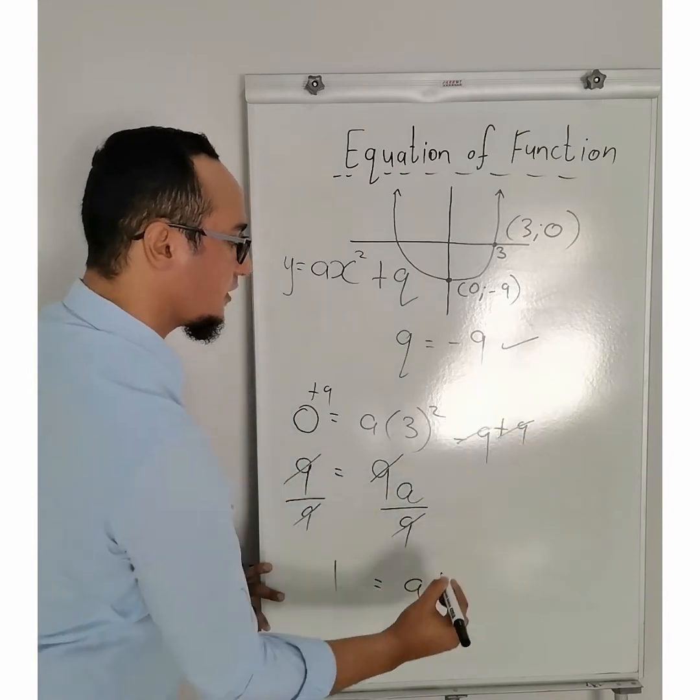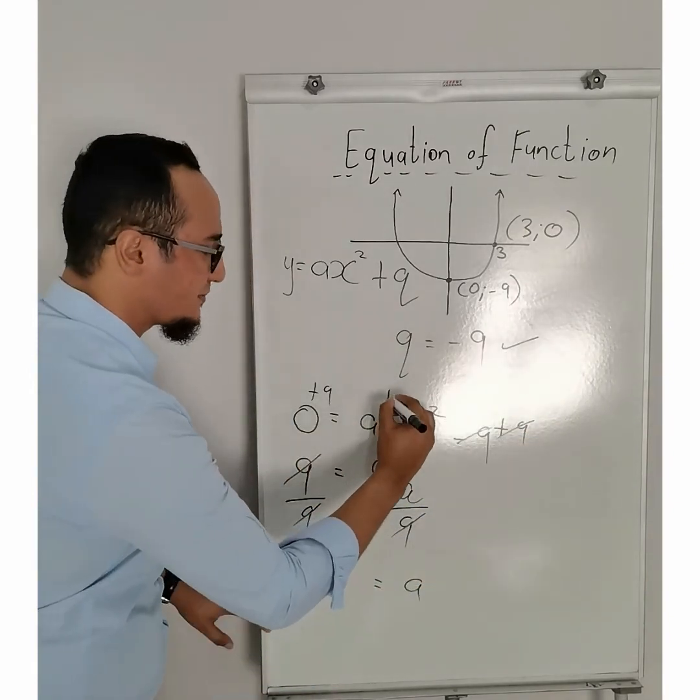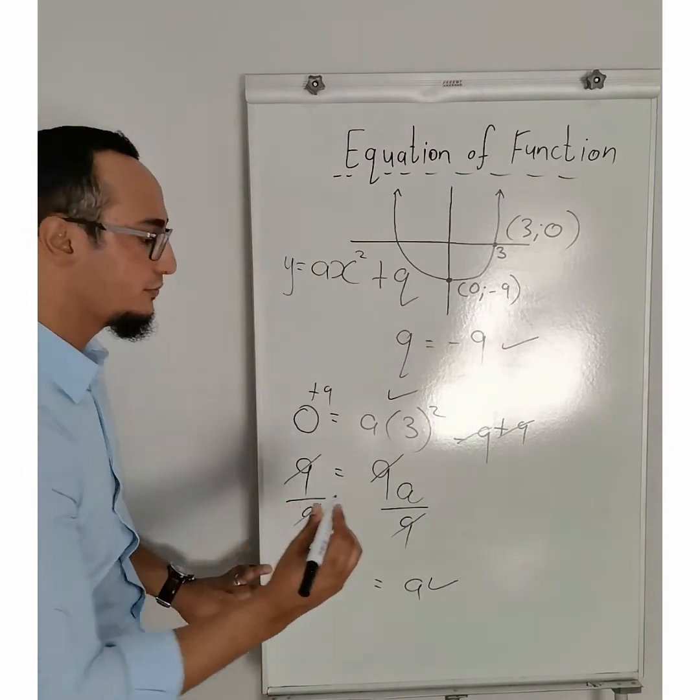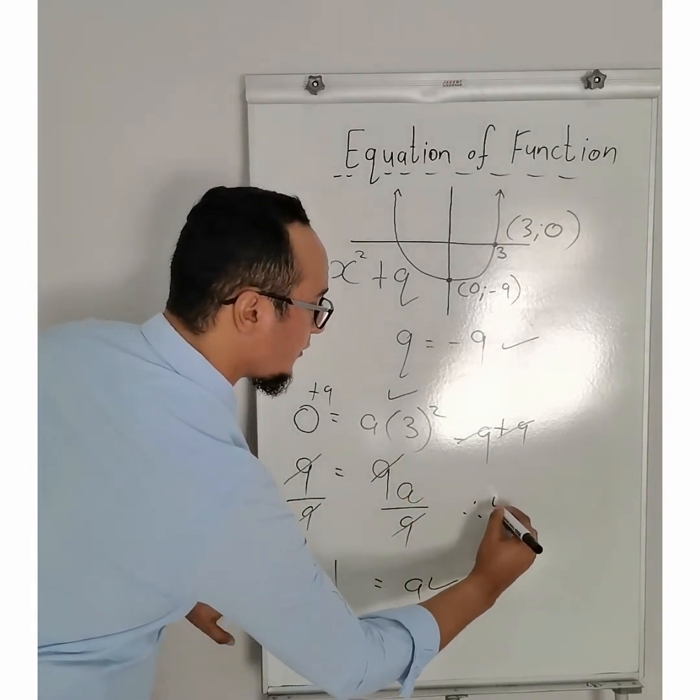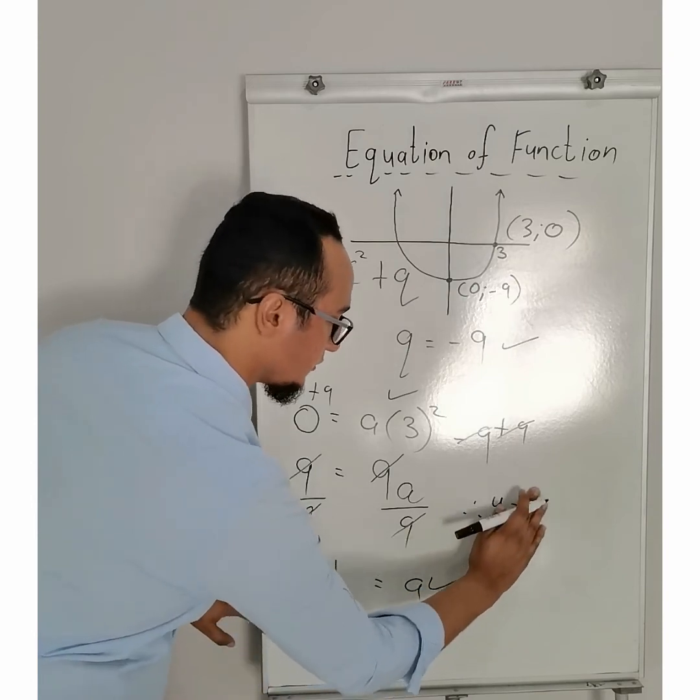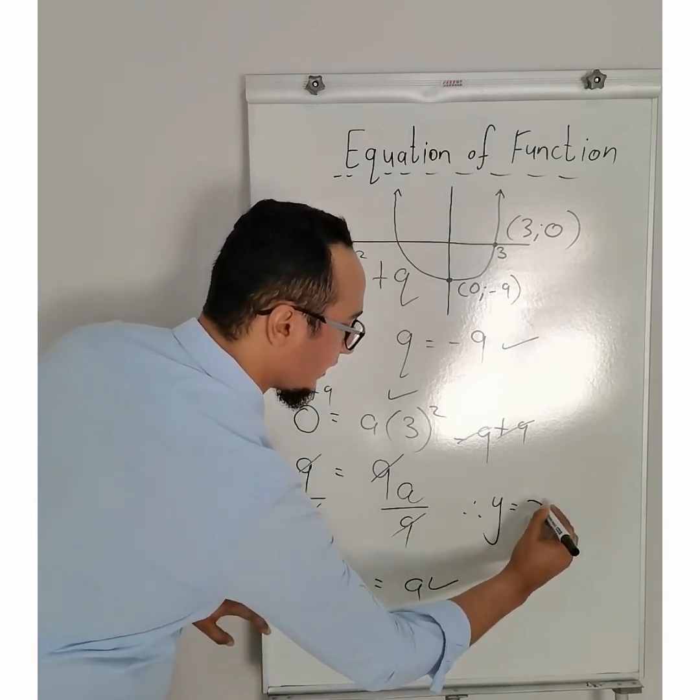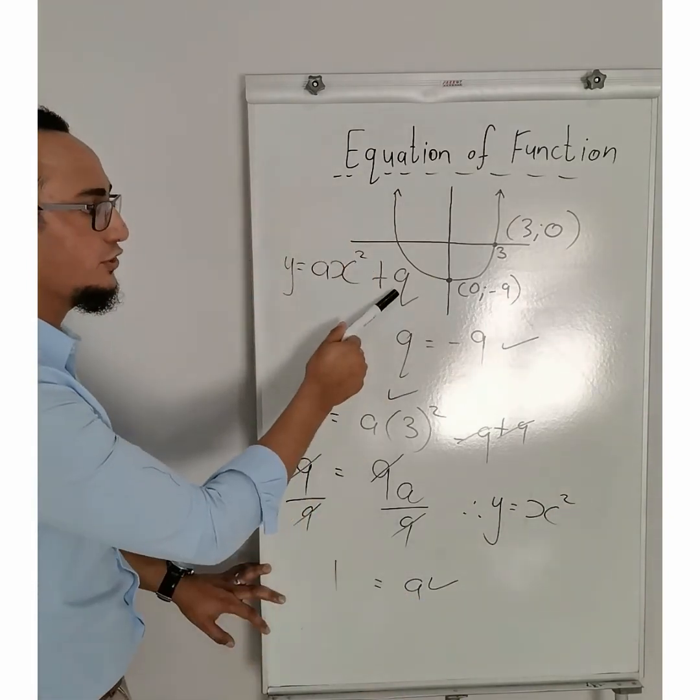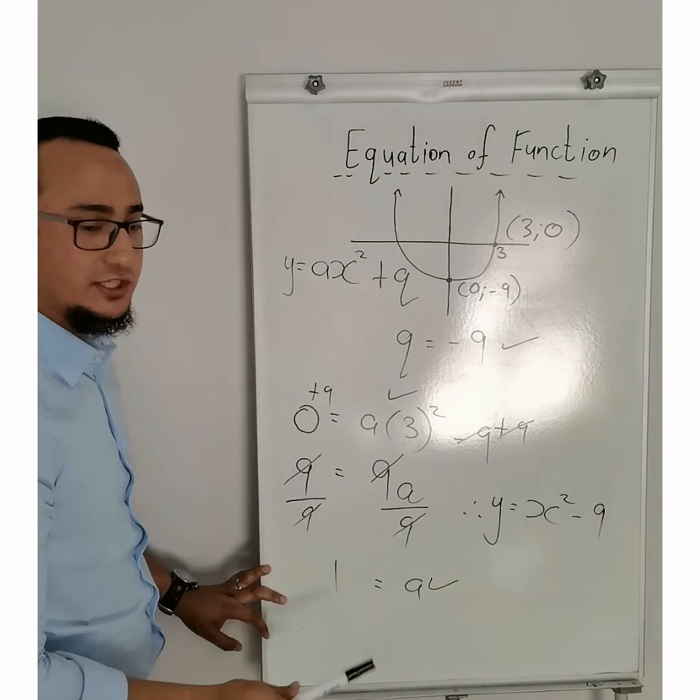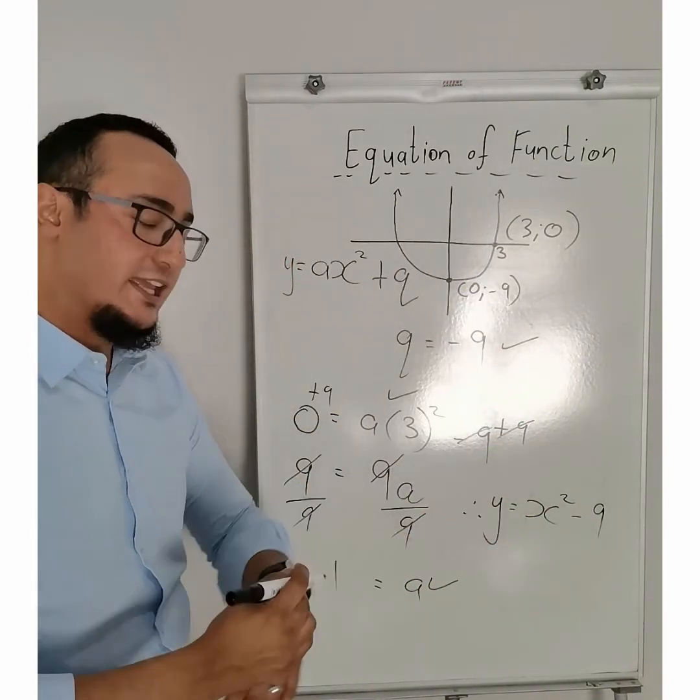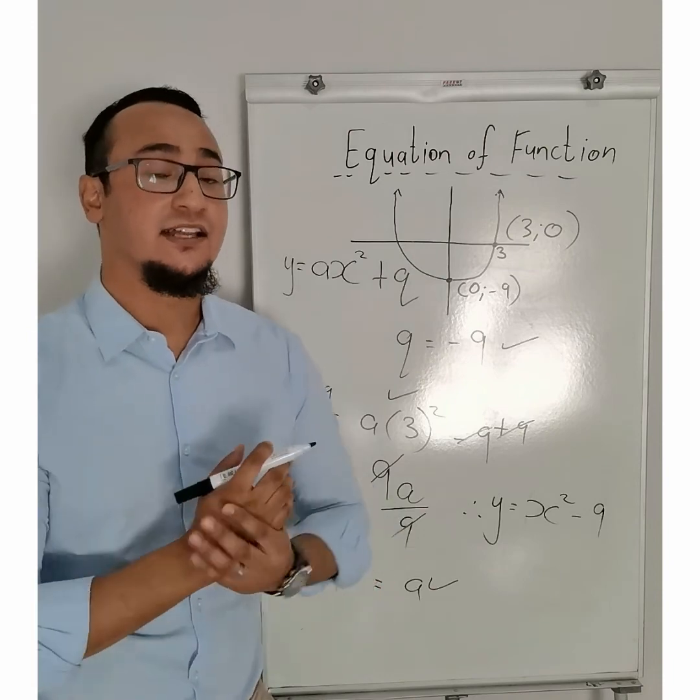Your first mark, perhaps one mark for substitution, third mark, and your fourth mark will be, therefore, y is equal to, imaginary 1, I do not need to write it, x squared, and what's the value of q? Minus 9. So, the equation of this graph over here is going to be x squared minus 9.